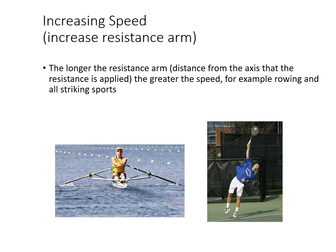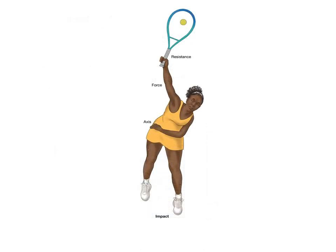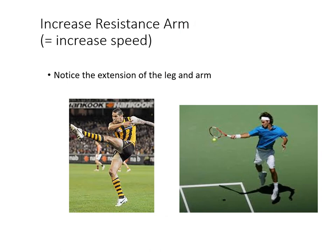Longer oars in rowing generate greater range of motion and speed by increasing the resistance arm. Equally, a taller tennis player with a longer arm and longer racket, hitting at the top point of the racket, deliberately increases the resistance arm to gain the advantage of greater speed at the racket head. The axis could be the hip, shoulder, or elbow depending on the player — but with force in the middle it remains a third class lever.